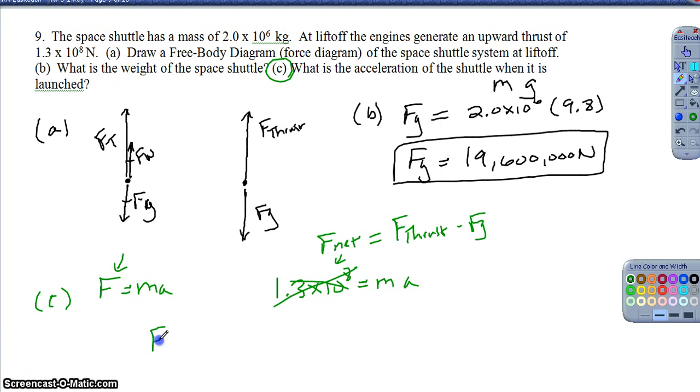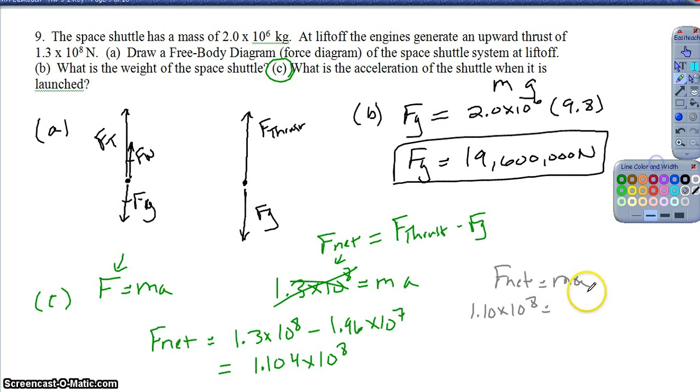To find the net force, if I look at this diagram, the net force is simply the force of the thrust going upward minus the force of gravity, the weight of the shuttle pulling down. So my net force is actually 1.3 times 10 to the 8th minus my 1.96 times 10 to the 7th. So that net force ends up being about 1.104 times 10 to the 8th. So then I use my net force equals mass times acceleration. So 1.10 times 10 to the 8th equals the mass of the space shuttle, 2 times 10 to the 6th, and then I can find my acceleration. So solving for this acceleration, we get about 55.2 meters per second squared.